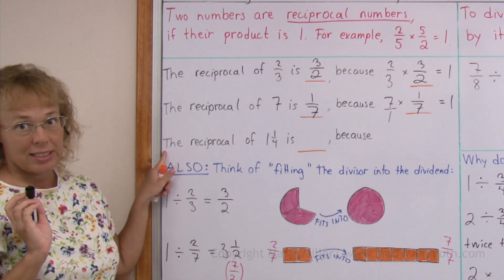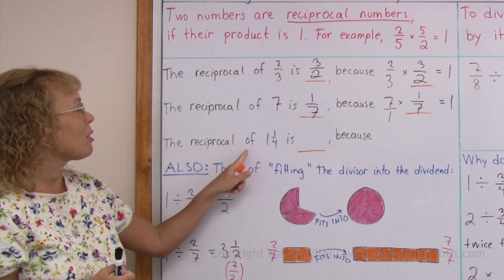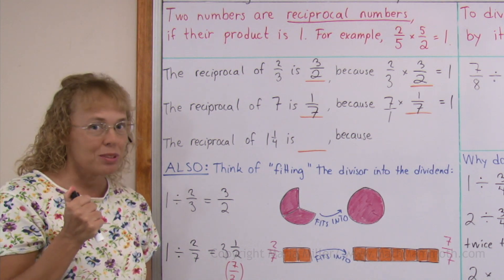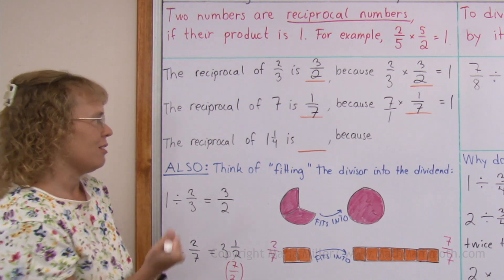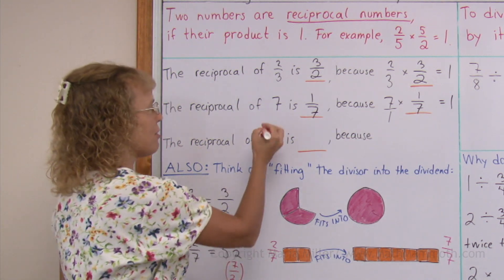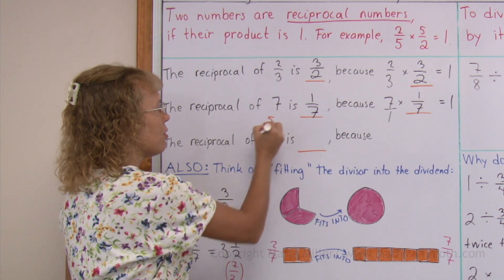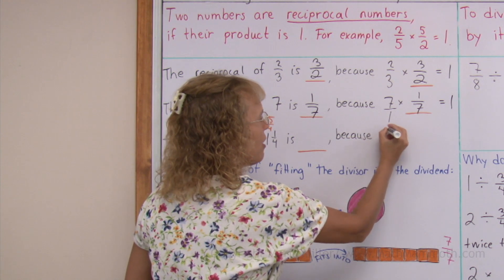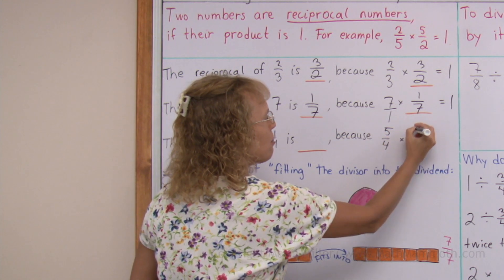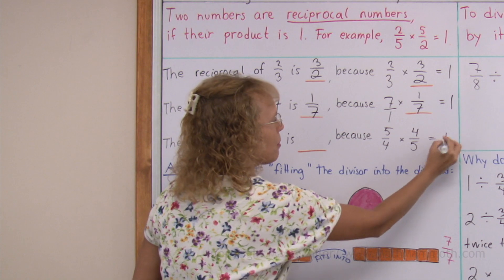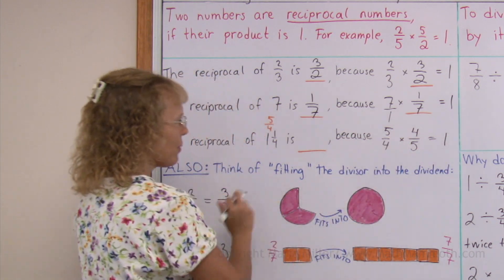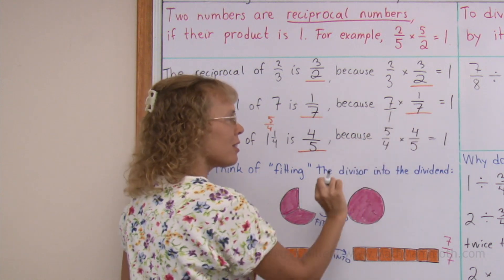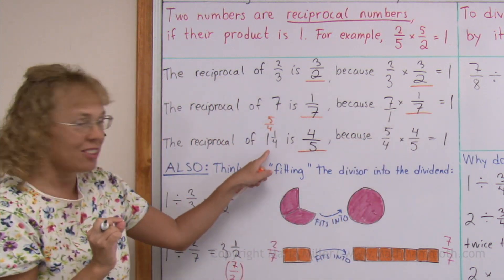How about a mixed number, the reciprocal of 1 and 1 fourth? Over here it helps if you first write this mixed number as a fraction. It is 5 fourths, right? And then, 5 fourths times 4 fifths would equal 1, because you get 20 divided by 20. So, we get 4 fifths here. Again, flipping it works, but you have to first write it as a fraction.